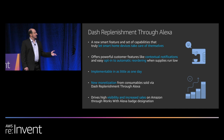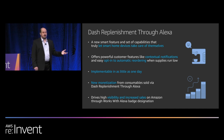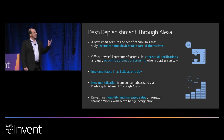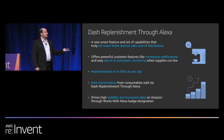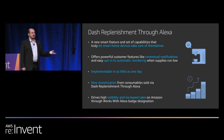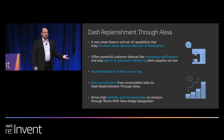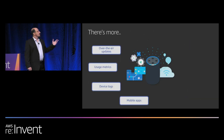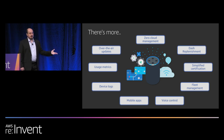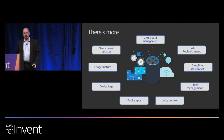Another interesting feature supported by Alexa Connect Kit is Dash Replenishment Service, or DRS in short. DRS helps a product track the usage of consumables — for example, coffee filters in a coffee maker — and alert the user when supplies are running low, or even automatically reorder them. And there is more and more in ACK. My colleague Mohamed will talk about this in more detail.